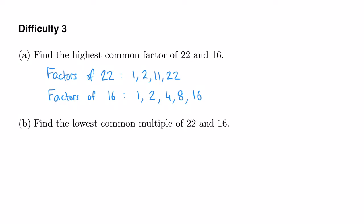Now which numbers are in both lists? Well 1 is in both lists and 1 is therefore a common factor of 22 and 16. In fact 1 is going to be a common factor to any pair of whole numbers because 1 goes into every single whole number.